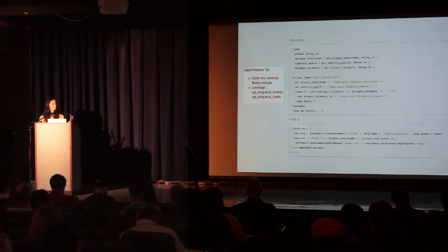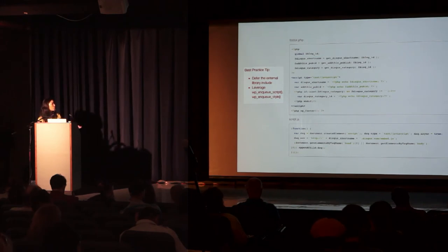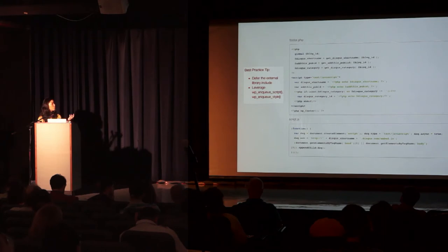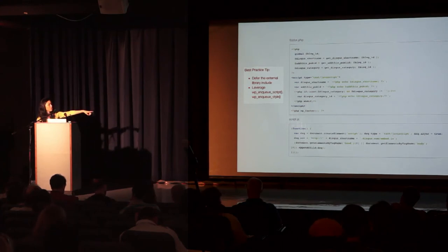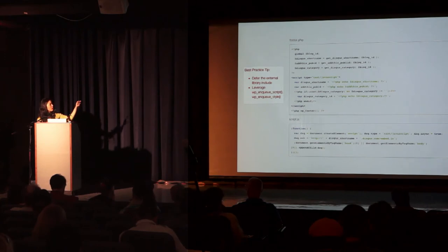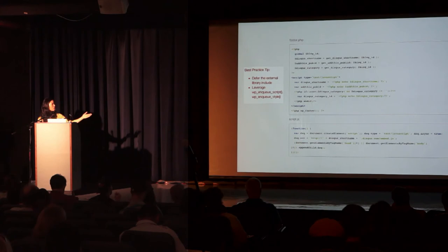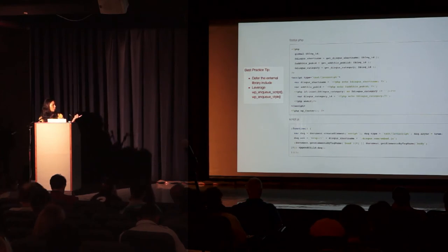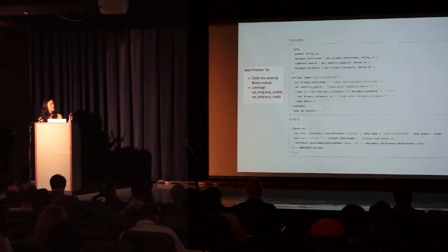We deferred script.js to be included in the footer via the wp_footer function. We needed variables assigned before the external script runs, so all assignments must happen before wp_footer is called. In script.js, we call Disqus based on the short name already assigned. The Disqus category works because the Disqus library looks for the variable disqus_category_id — if it's available, it uses it; if not, it uses the default.